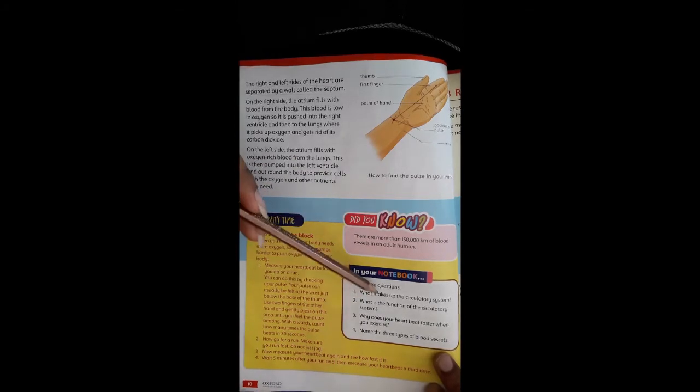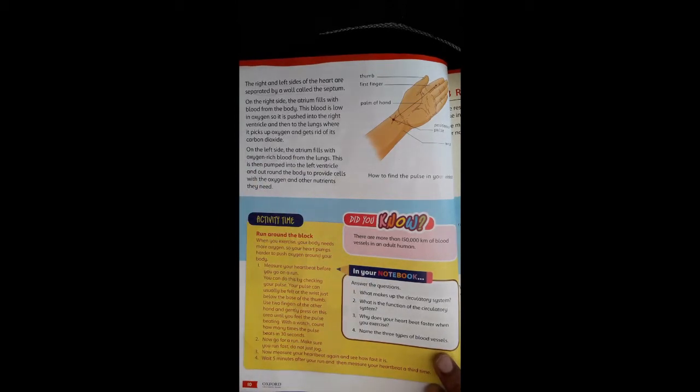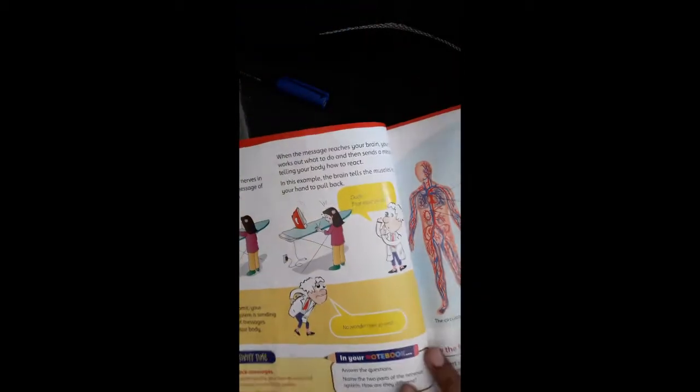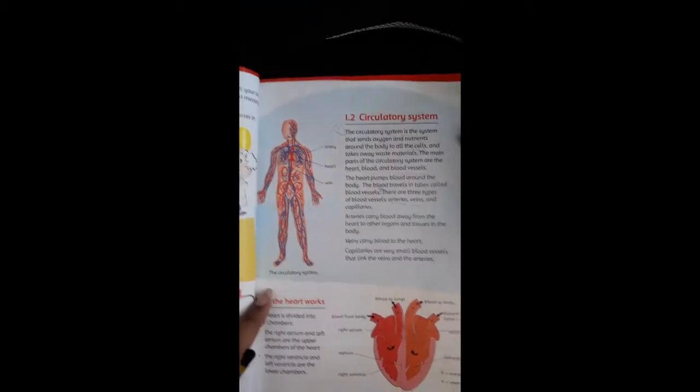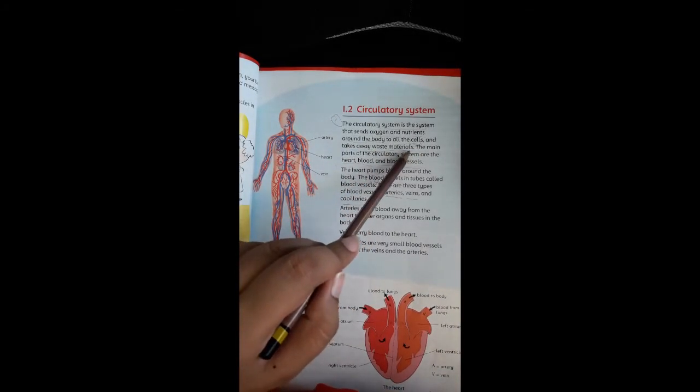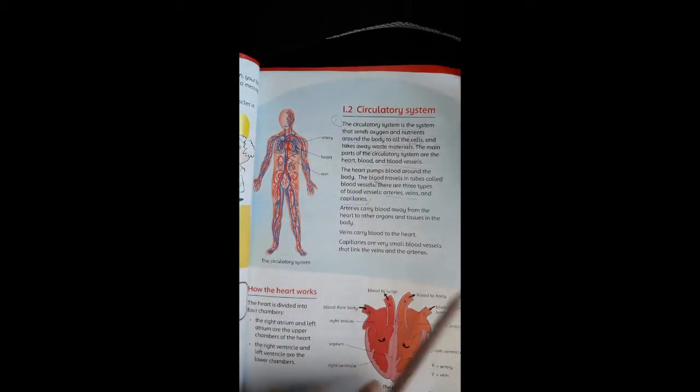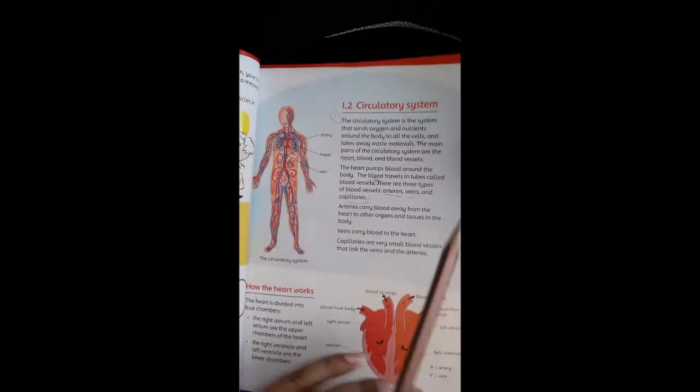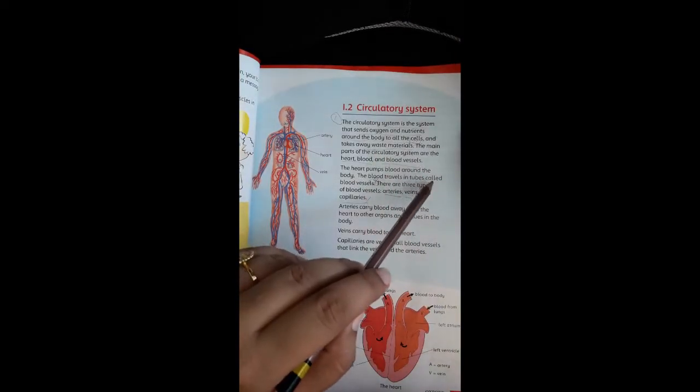What makes up the circulatory system? The circulatory system sends oxygen and nutrients around to all the cells and takes waste materials. This is the first question. Second question: what is the function of the circulatory system?